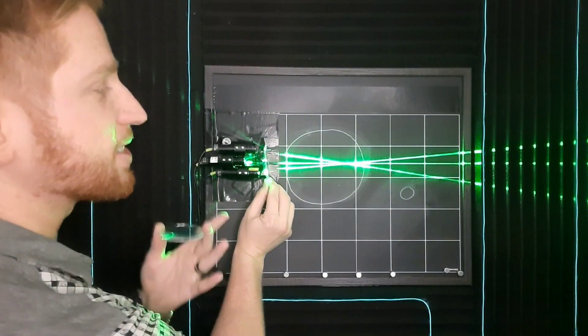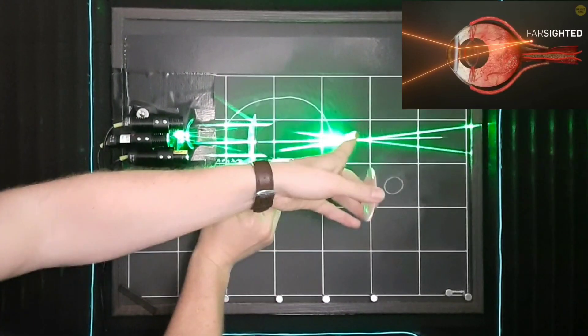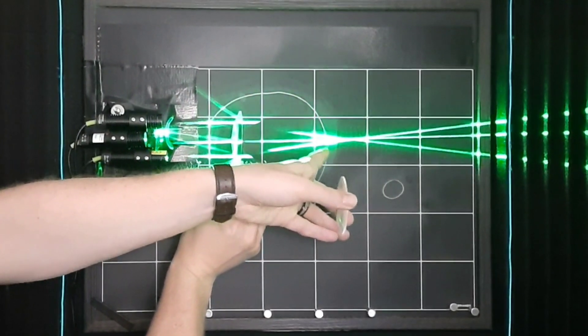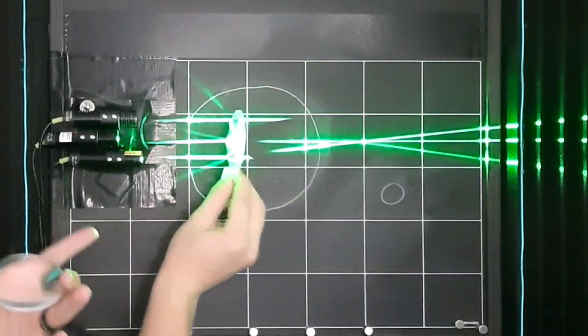On the other hand, far-sightedness is the opposite. So there, the light is focused later than it should be. It's trying to focus outside of the eye, so by the time it hits the retina, it hasn't quite come to a focus yet, and you can see those lines are spread out.